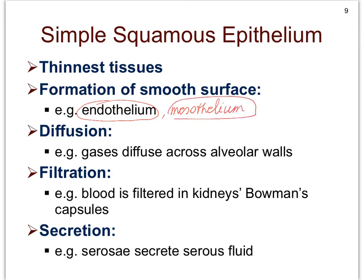I will readdress those two terms in the following slides. Because this tissue is so thin, it can also easily allow for the diffusion of gases — particularly oxygen and carbon dioxide — both in the lungs and across the walls of tiny blood capillaries. Filtration is also one of the functions of simple squamous epithelial tissue in the kidneys, where we find something called Bowman's capsules. And finally, secretion.